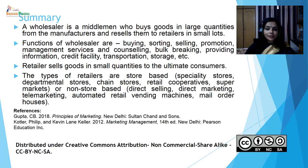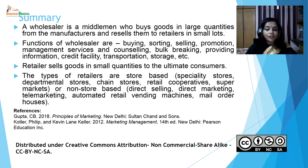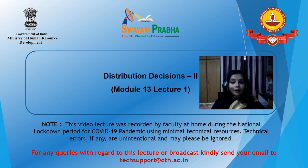To summarize this lecture: a wholesaler is a middleman who buys goods in large quantities from the manufacturers and resells them to the retailers in small lots. Functions of wholesalers include buying, selling, promotion, management services and counseling, bulk breaking, providing information, credit facility, transportation, storage, etc. Retailer sells goods in small quantities to the ultimate consumers. Types of retailers include store-based — specialty stores, departmental stores, chain stores, retail cooperatives, supermarkets — and non-store-based — direct selling, direct marketing, telemarketing, automated retail vending machines and mail order houses. Thank you very much students. This was Distribution Decision Part 2, Module 13, Lecture 1.